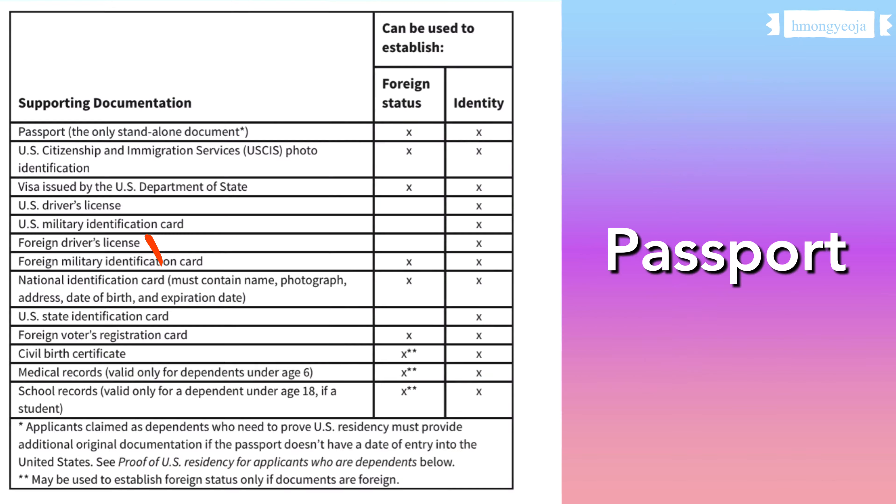When you apply for an ITIN, you need to provide supporting documentation for your spouse's identity. You can mail their passport in with the application, but I didn't feel comfortable mailing my husband's passport to the IRS because I didn't know how long it would take to get it back. If you don't want to send in the original passport, then you need to get a certified copy of your spouse's passport.